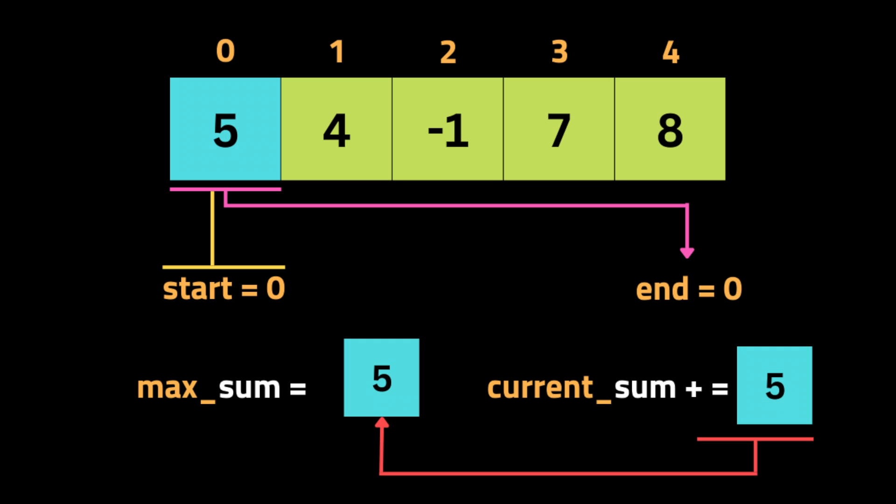Then we start iterating through the list of numbers. At each iteration, we add the current number to current_sum. Then if current_sum is bigger than max_sum, we update max_sum to be current_sum and update end to be the current index. If current_sum is less than zero, it means we have a negative running sum and we want to start a new subarray, so we set current_sum to zero and set start to end plus one.